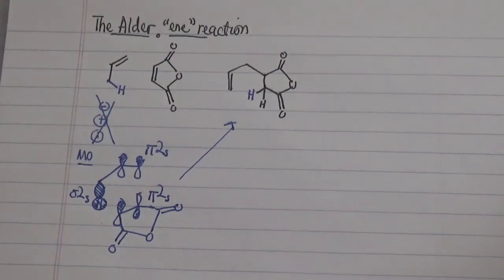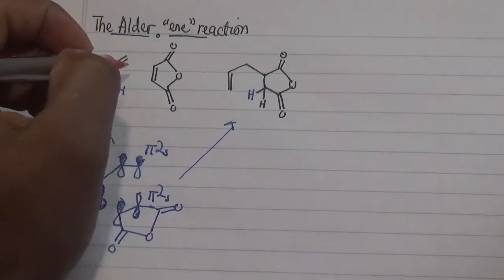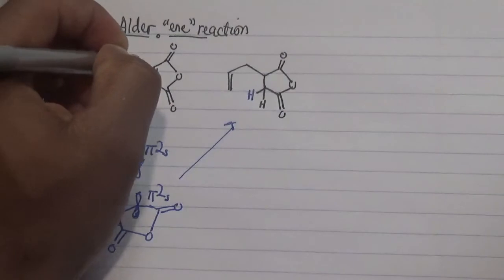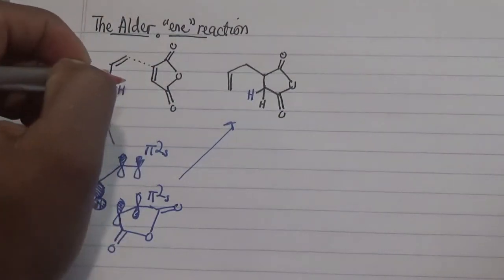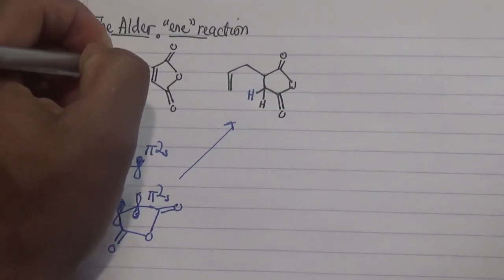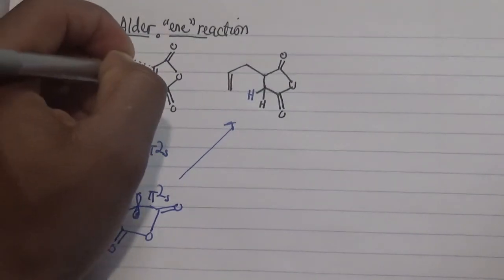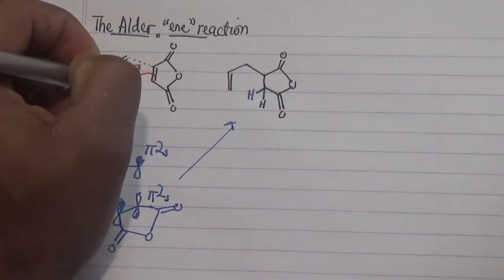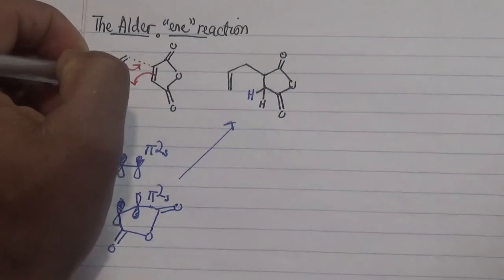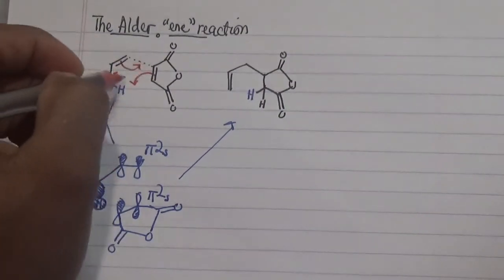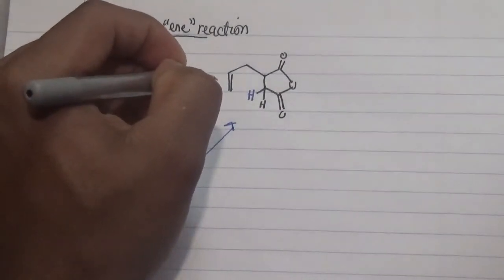Now let's actually reveal the cycloaddition process over here. The cycloaddition process involves this particular region, and in this particular case this pi bond forms a sigma bond. This pi bond actually forms a sigma bond with this hydrogen over here, while the sigma bond over here forms a pi bond. That is how this actually becomes that.